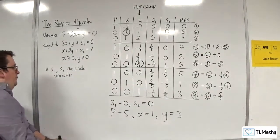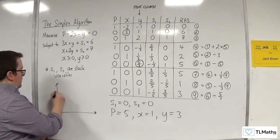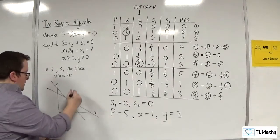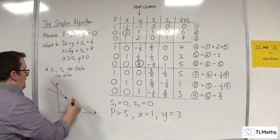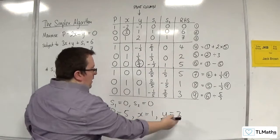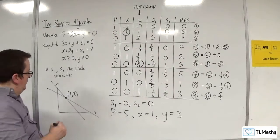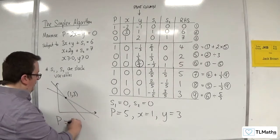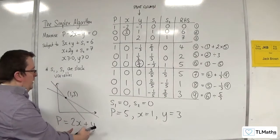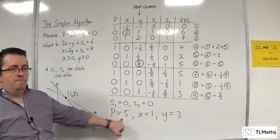So where we had our feasible region, which looked something like this, this point here had the coordinates 1, 3. And that is the point that maximizes the P equals 2X plus Y. 2 lots of 1 plus 3 makes 5, which is the value that we get there.